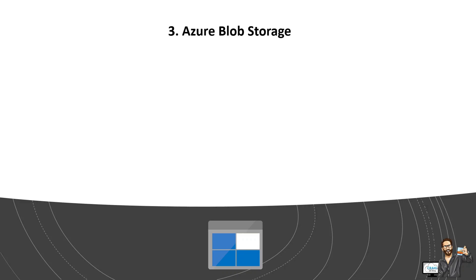Number three, as you can see from the icon, is Azure Blob Storage. Blob Storage is Microsoft's object storage solution for Azure, optimized for storing massive amounts of unstructured data — data that doesn't adhere to any particular data model or definition, such as text or binary data.